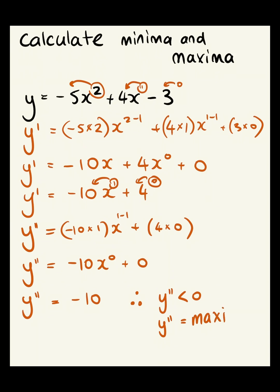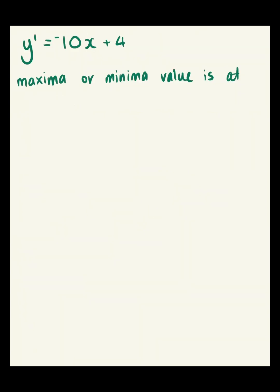So now what we want to do is calculate this maxima. We need to go back to our first derivative, which was negative 10x plus 4. When we're finding our maxima or minima, we need to set our first derivative to 0.